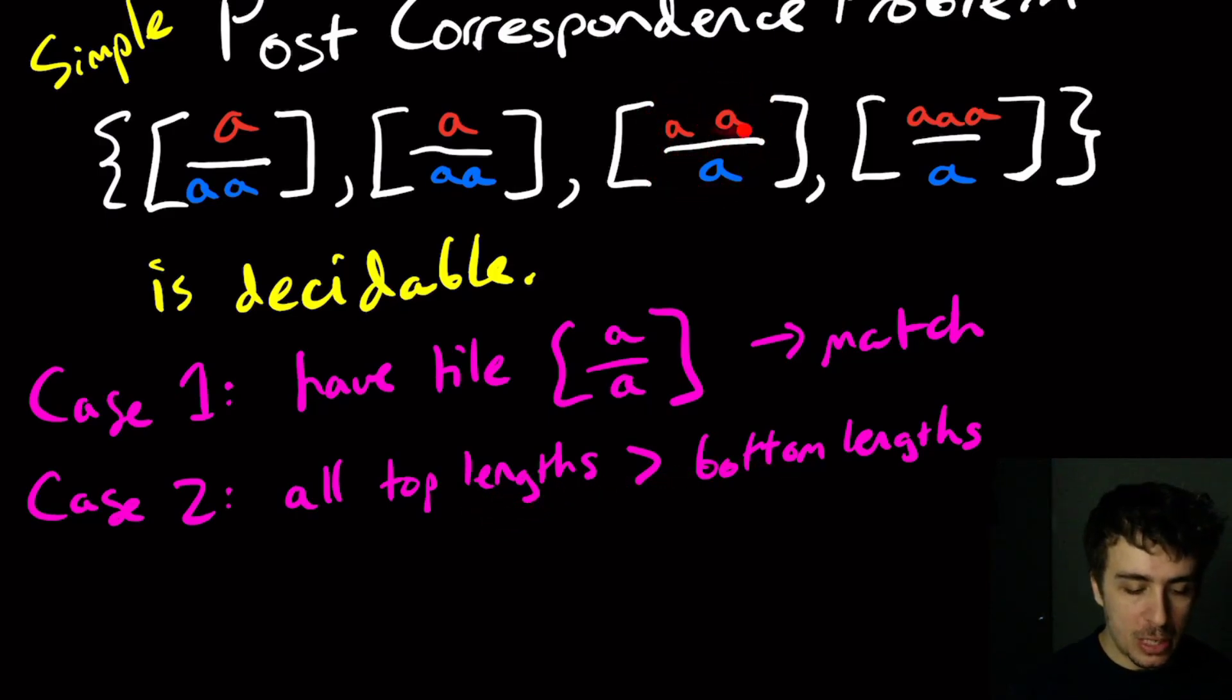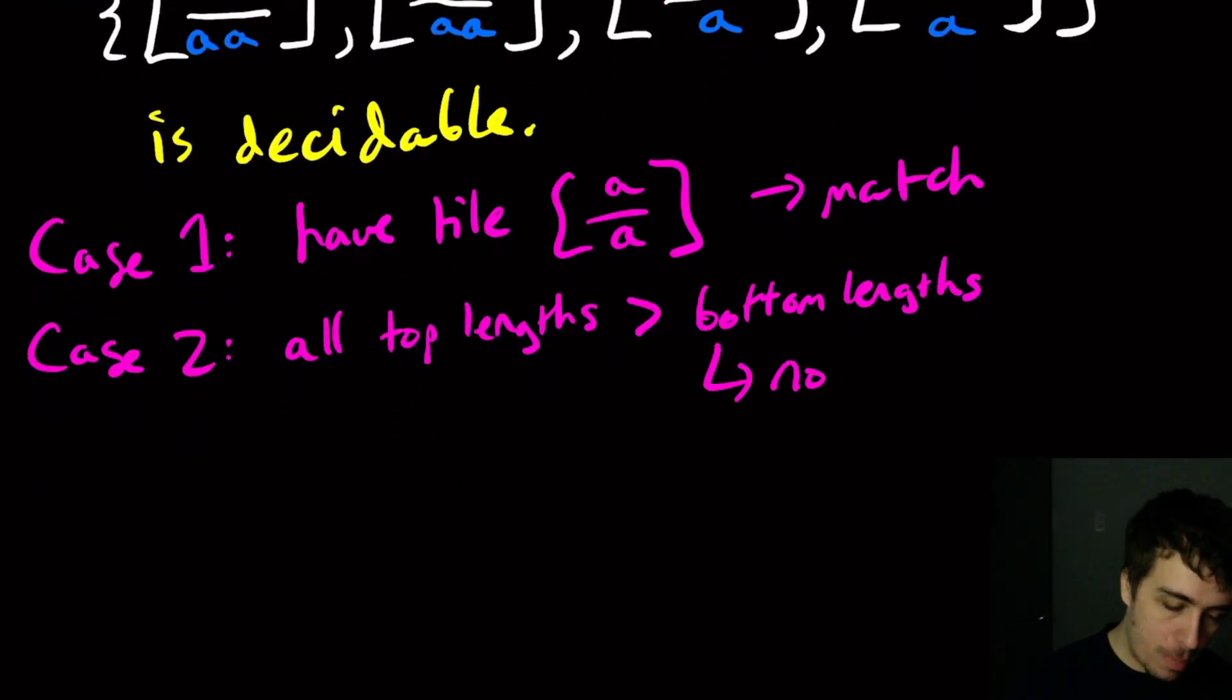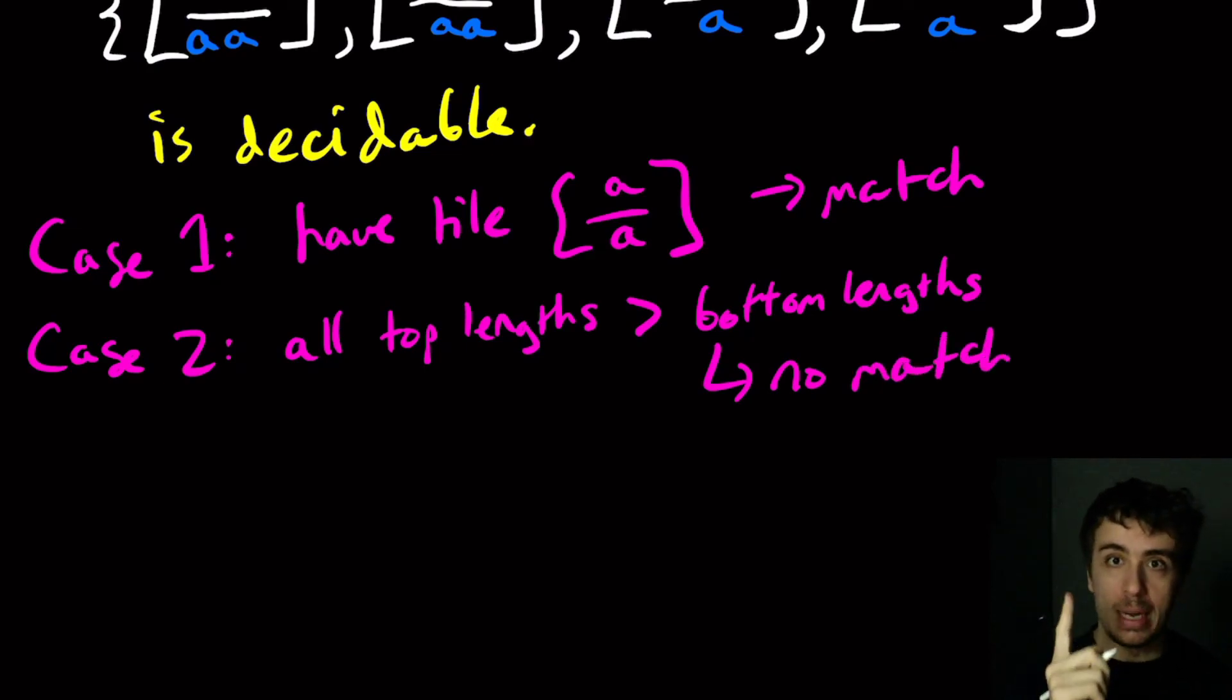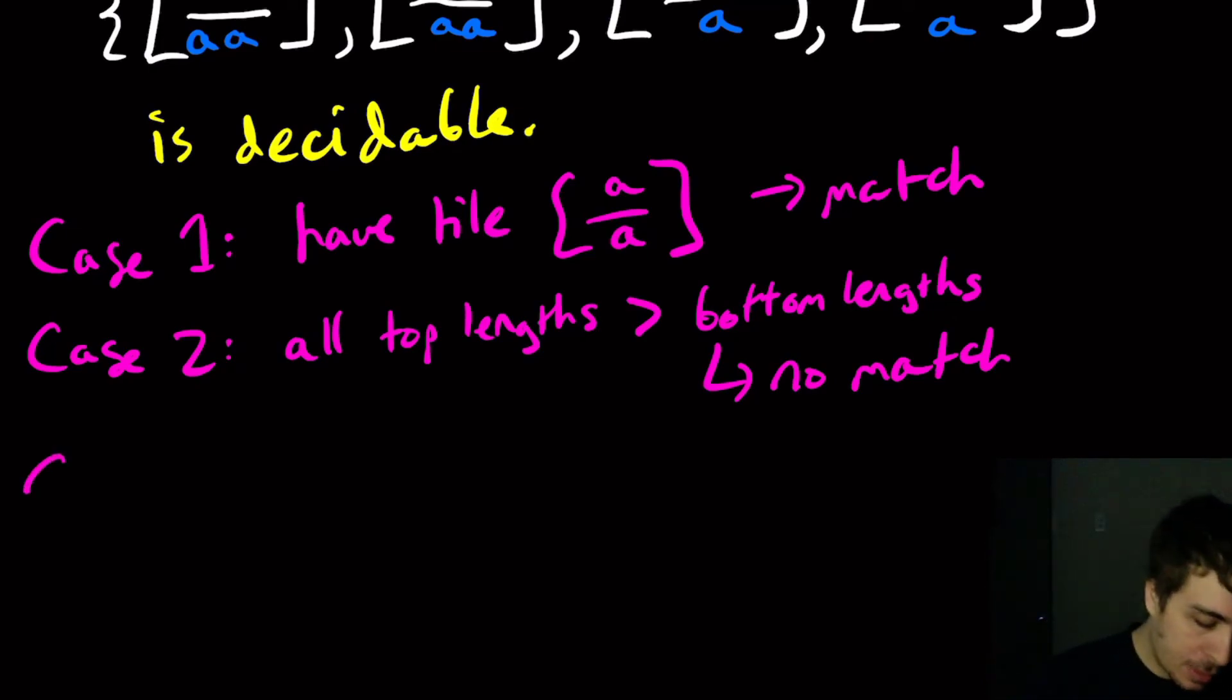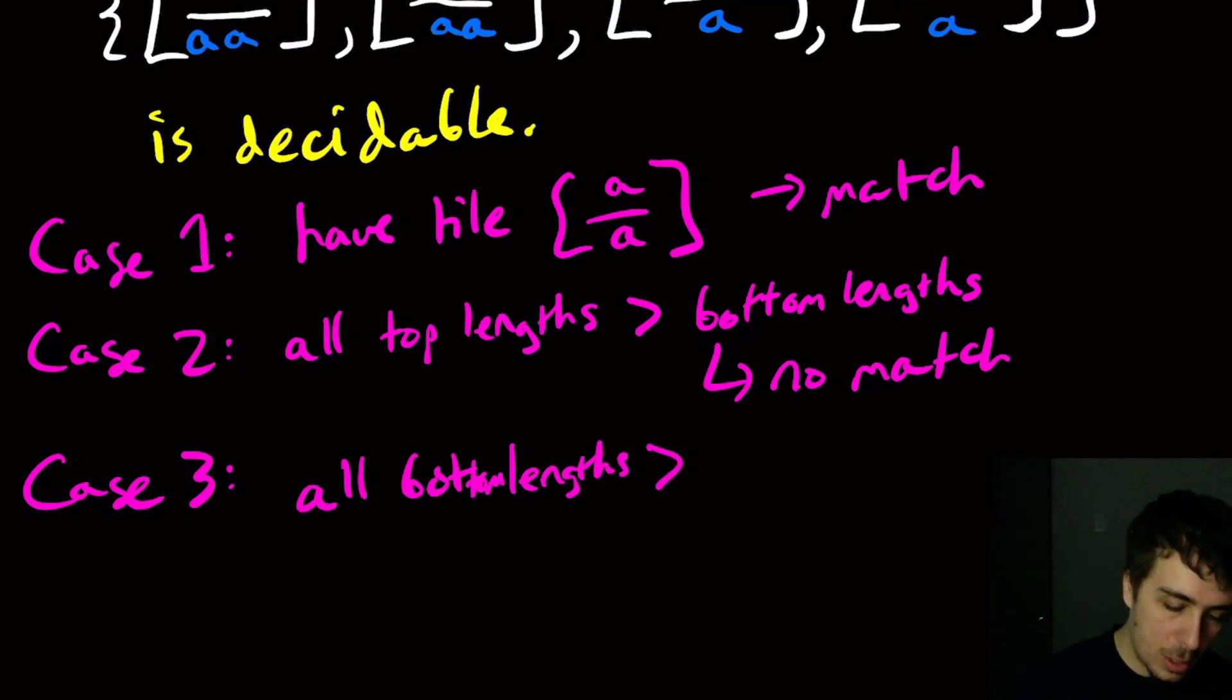So the top lengths are longer than the bottom lengths. Which means that if I try to pick this tile, then I'm never going to have the bottom catch up with the top ever again. And so there will never be a match in this case. So no match ever. Because there's only one character and all of the tiles have their top length longer than the bottom length. And then case three is all the bottom lengths are bigger than the top lengths.